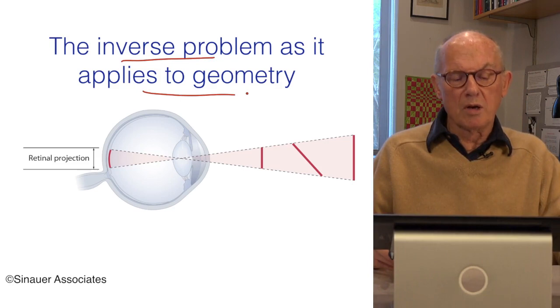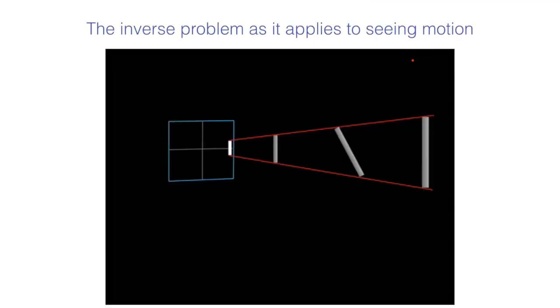It applies as well to color and motion. Let me just show you quickly how the same inverse problem applies to seeing motion. It also applies to color. We'll talk about that later, but let me show you this before we end this lesson. So, here is the retina shown diagrammatically now. It could be any detecting service, but let's consider it to be the retina. And here is the stimulus on the retina.